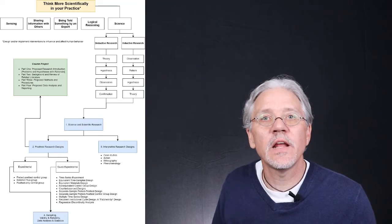Now that leads to the very first big part of the course, which is science and scientific research. Now from science and scientific research, that's broken up into two kind of subcategories. One is positivist research designs, and the other is interpretive research designs.